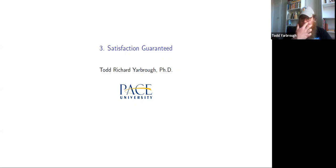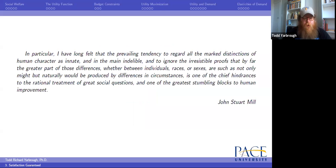This is part one of the lecture video for the chapter 'Satisfaction Guaranteed.' In this chapter we really break open the idea of what motivates consumer demand. The ultimate goal of this chapter is to build the demand curve and the demand function, but in order to do so we want to start with the roots of that question: where does consumer demand come from? Where does it originate?